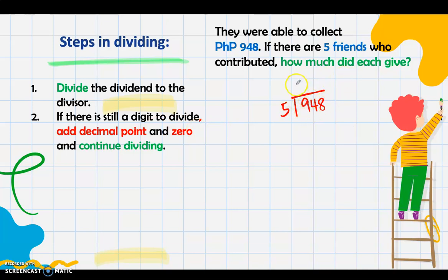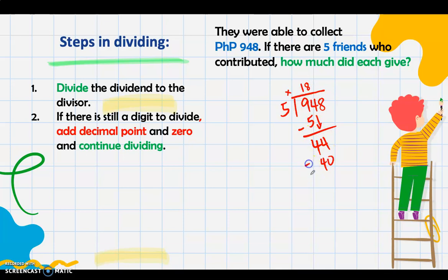Let's divide first. 9 divided by 5 is 1. Multiply: 5. Subtract, that's 4. Bring down 4. You bring down 1 by 1. 44, then divide again — repeat the process. 44 divided by 5 is 8. Multiply: 40. Subtract: 4. Bring down the 8: 48. 48 divided by 5 is 9, that's 45. There's a remainder of 3.